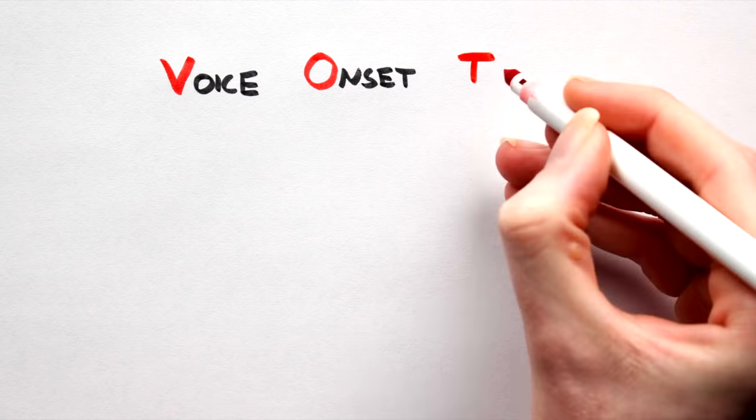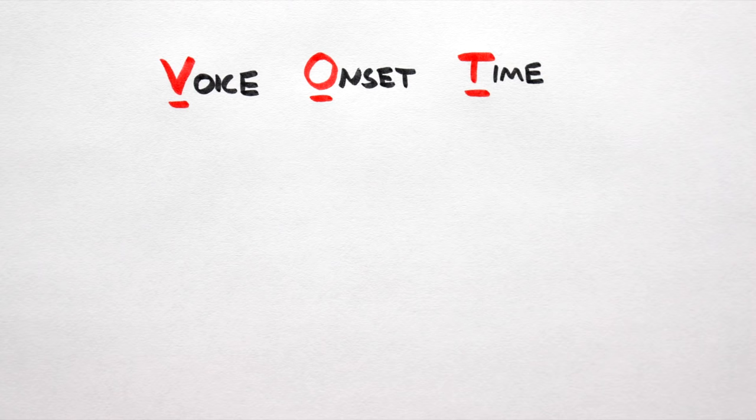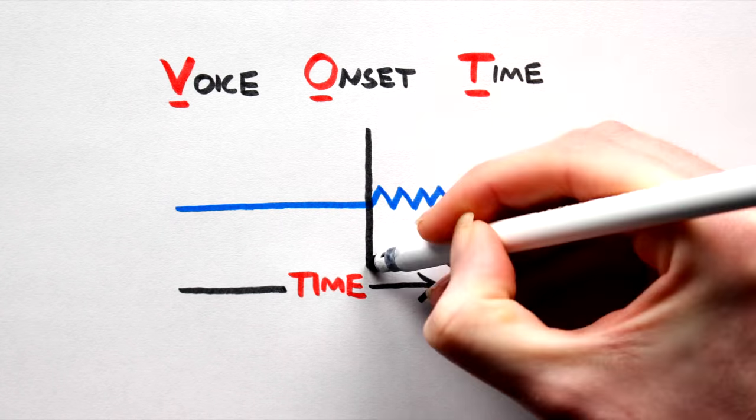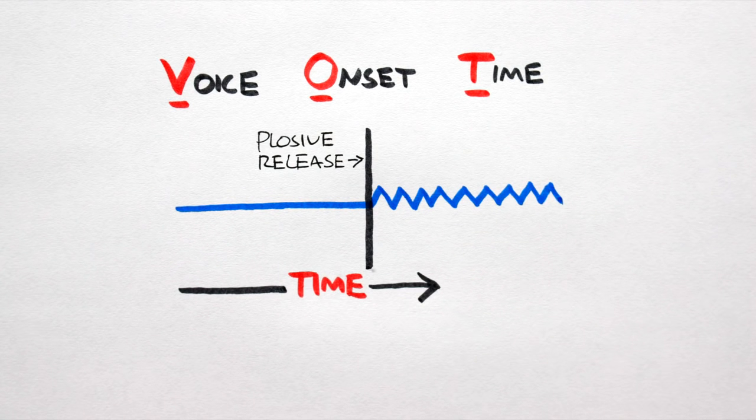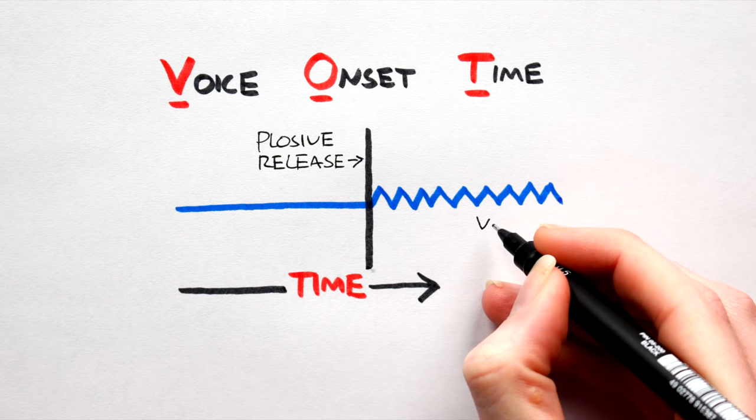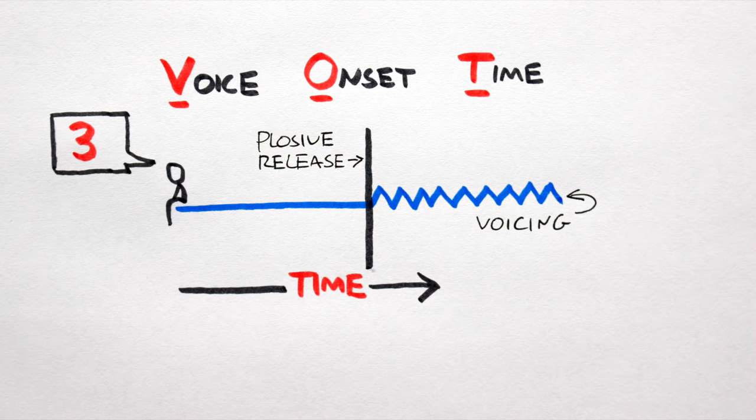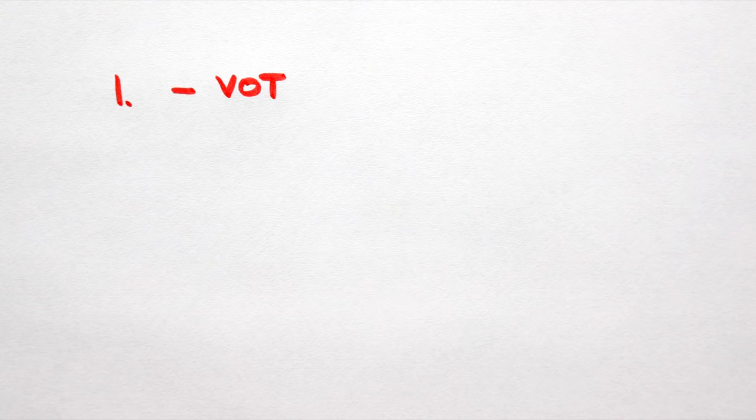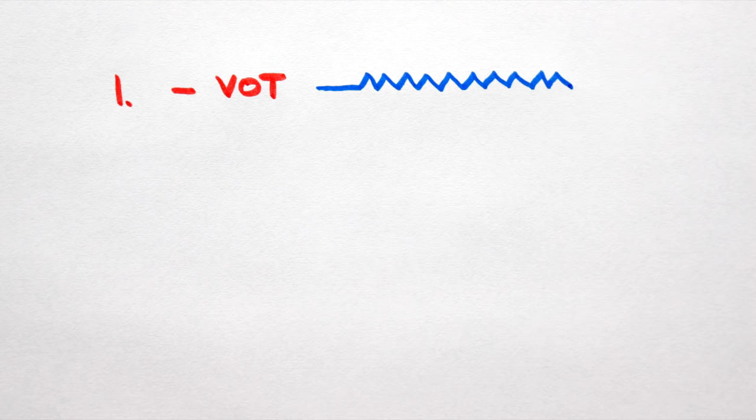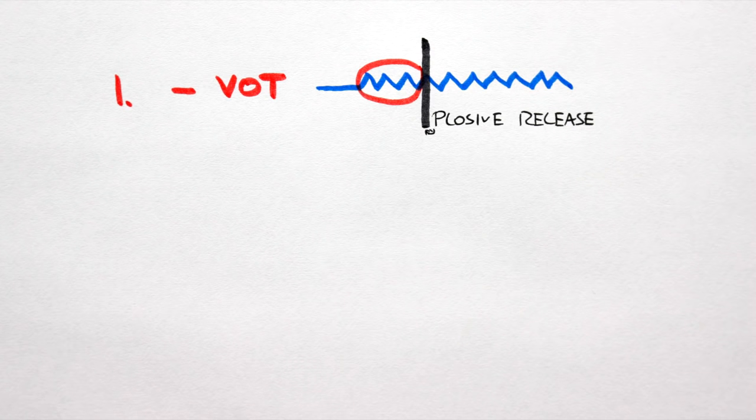Added to all this, there's a thing called voice onset time. This is defined as the length of time that passes between the release of a stopped consonant and the onset of voicing. There are three distinctions here. One, negative voice onset time, where the vocal cord vibration happens before the plosive release.